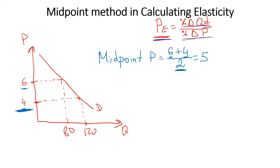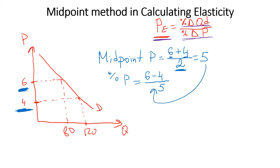Now, in order to find the percentage change in price, we take the difference between these two numbers and divide by the midpoint. This is a little different from the classical formula for calculating percentage change. You can take either 6 minus 4 or 4 minus 6 — it doesn't matter. If you get a negative sign, just ignore it and take the absolute value. I usually take the higher number minus the lower number and divide by the midpoint. So we get 2 over 5, which equals 0.4 or 40%.